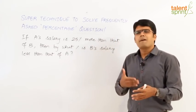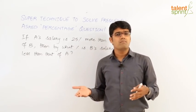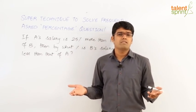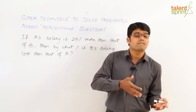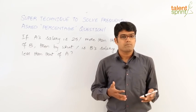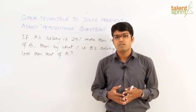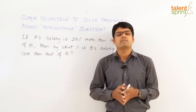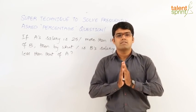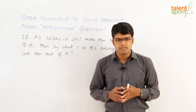Because A is 25% more than B, so obviously B is 25% less than A. Well, that is not the case. 25% is the wrong answer.